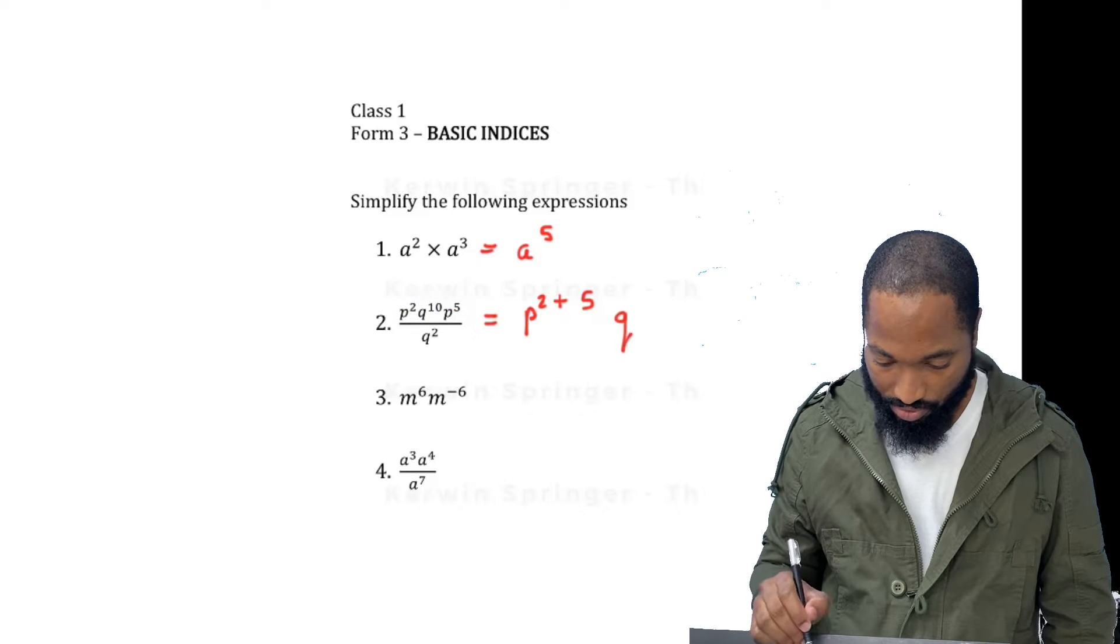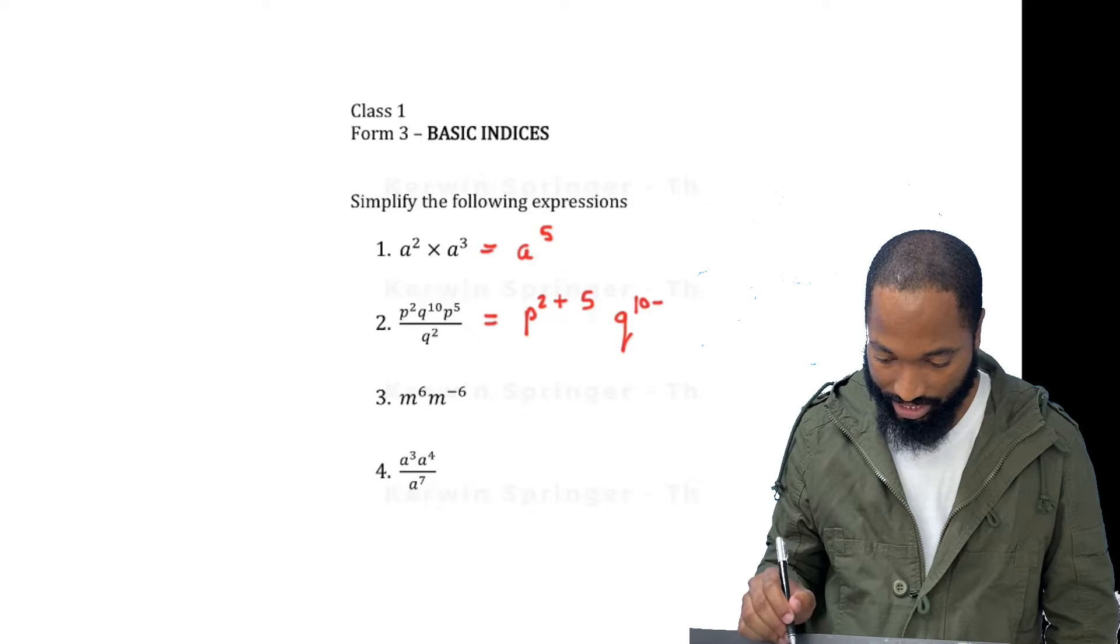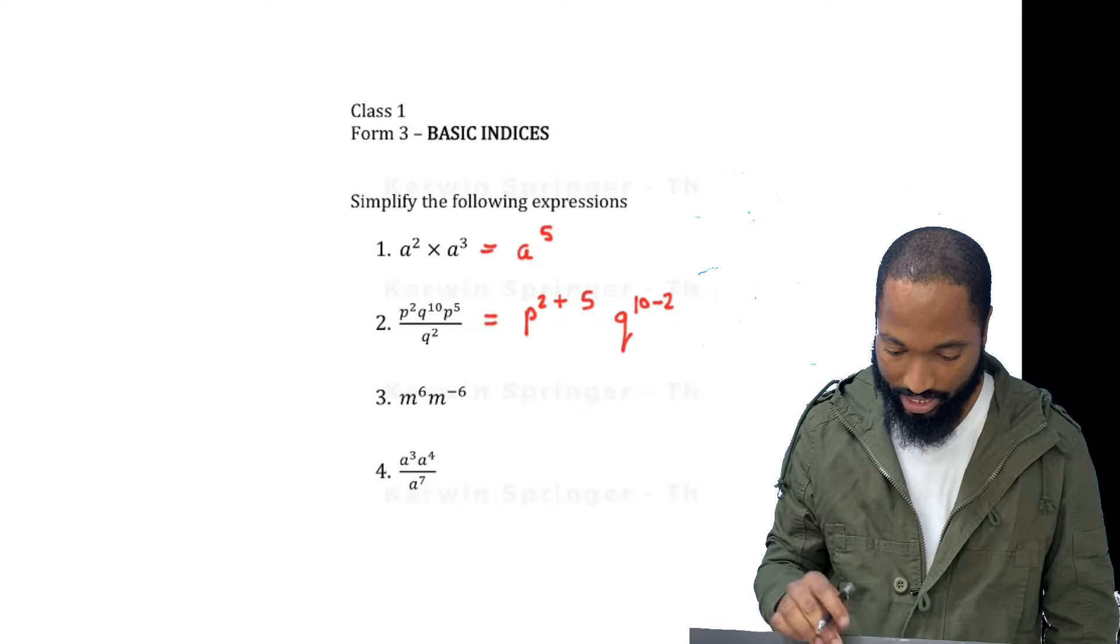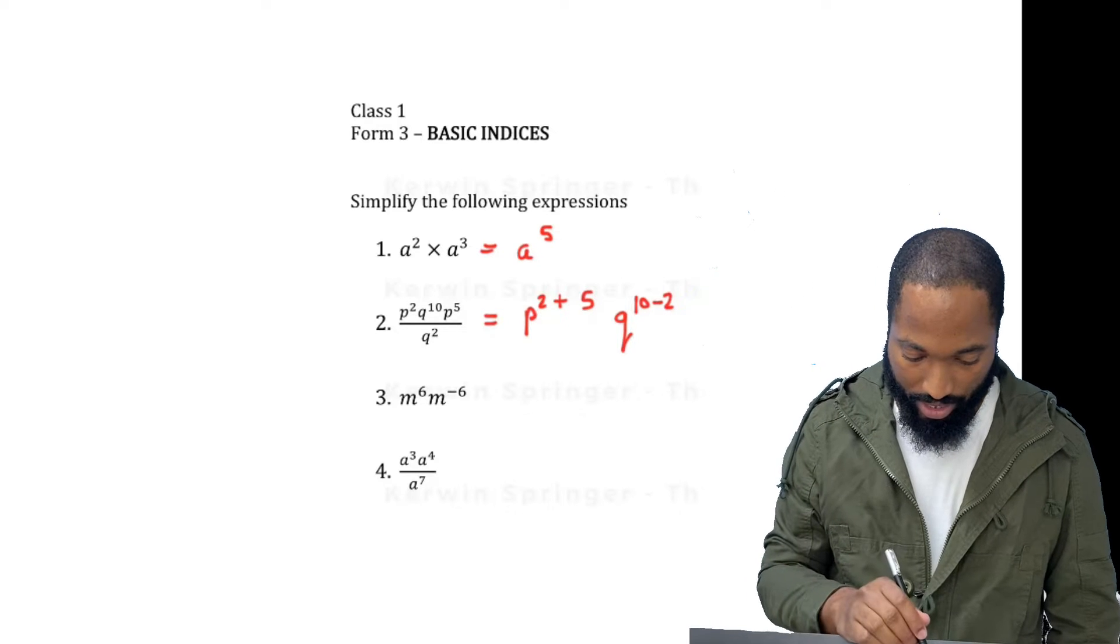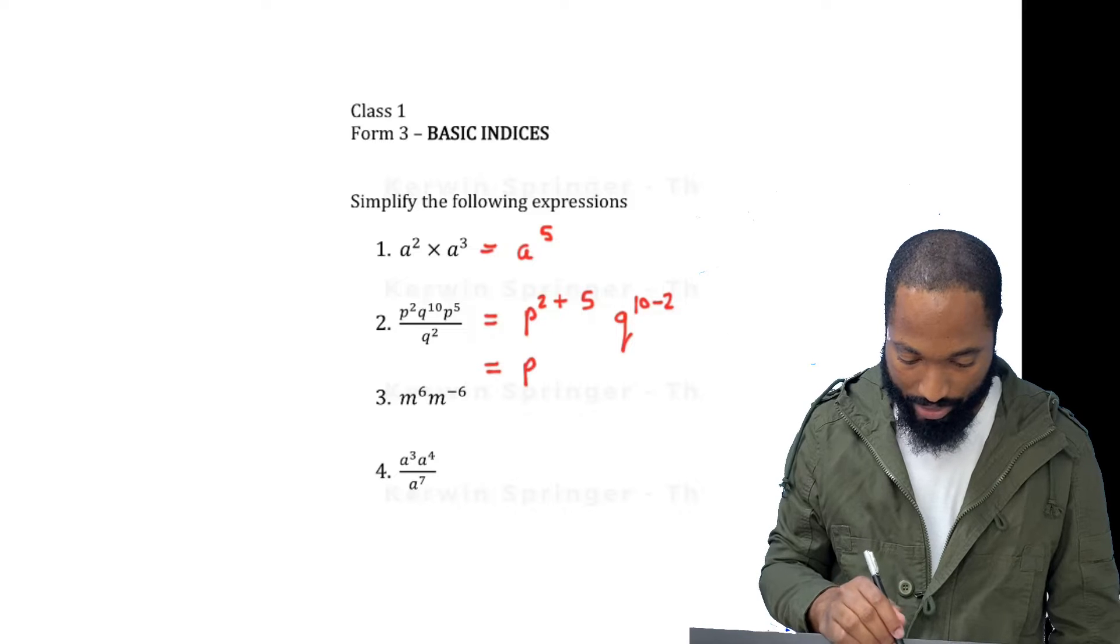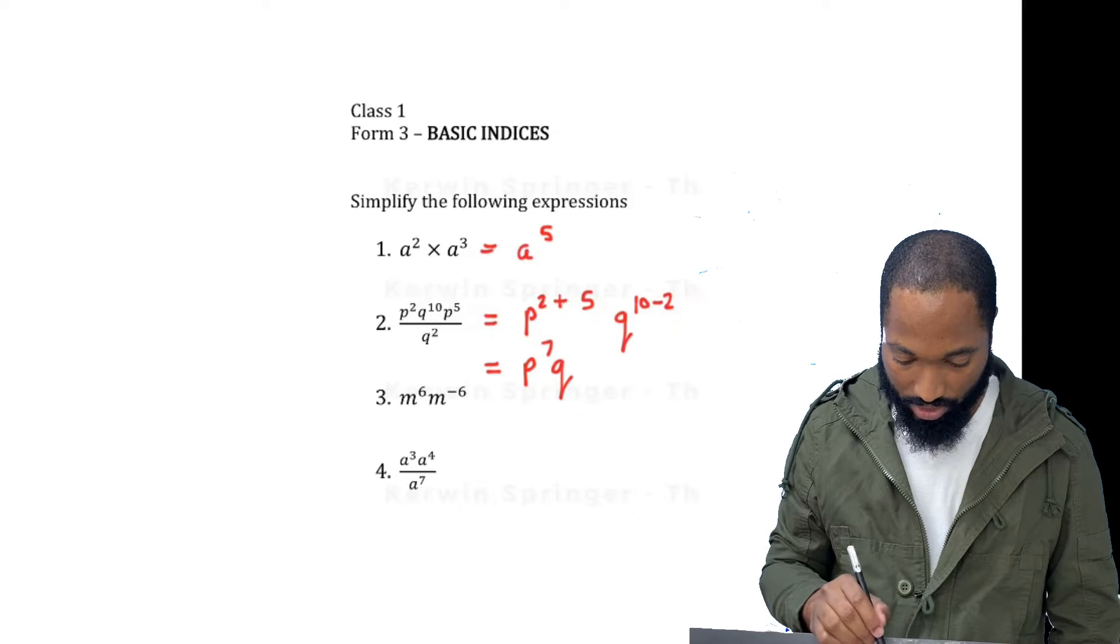So we take the 2 and the 5 because you're seeing common bases there. And let's do Q by 10, take away 2. So in the end, we would have ended up with P to the power of 7 and Q to the power of 8.